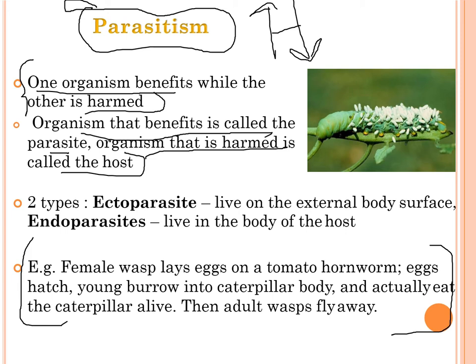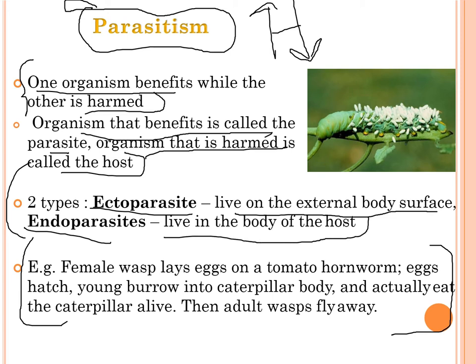There are two types of parasites: ectoparasites and endoparasites. Ectoparasites are the ones which live on the external body surface, and endoparasites are the ones which live inside the body of the host.